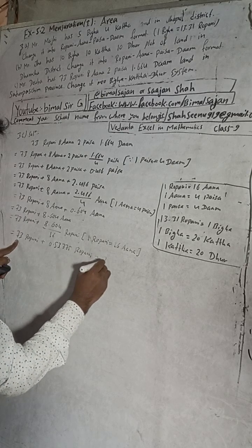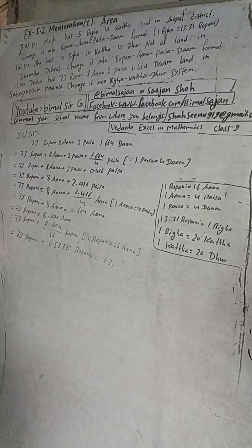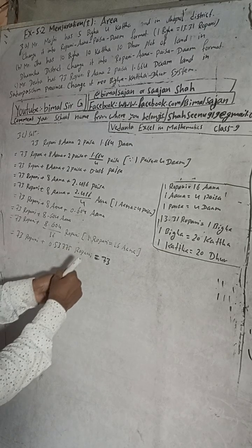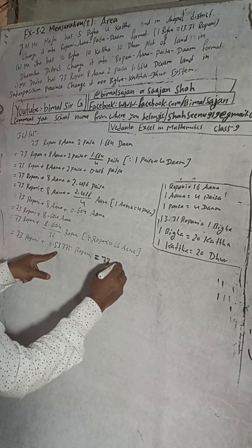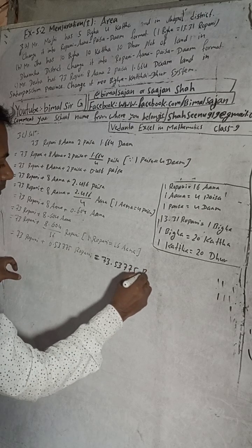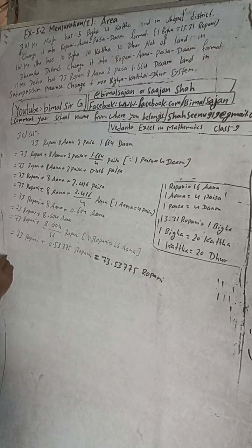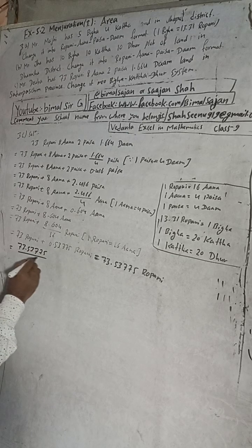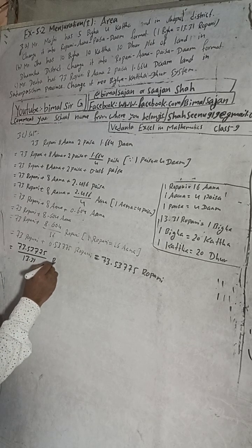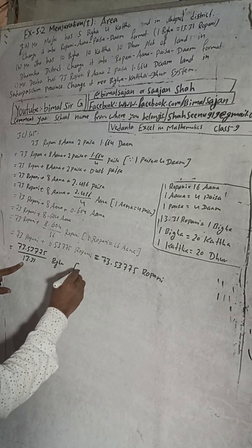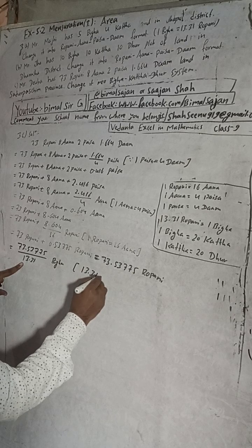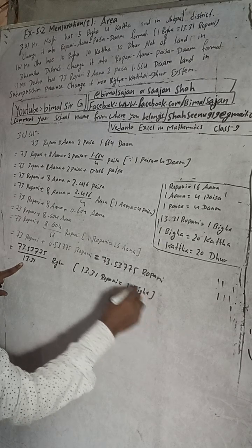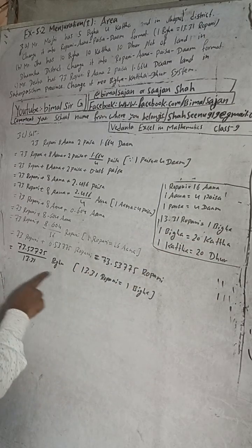When you add this, this will be 73.53775 ropani. And when you divide this by 13.31, this will work out into bigha. The reason is 13.31 ropani is equal to 1 bigha. So divide this ropani by 13.31 and you will get bigha.